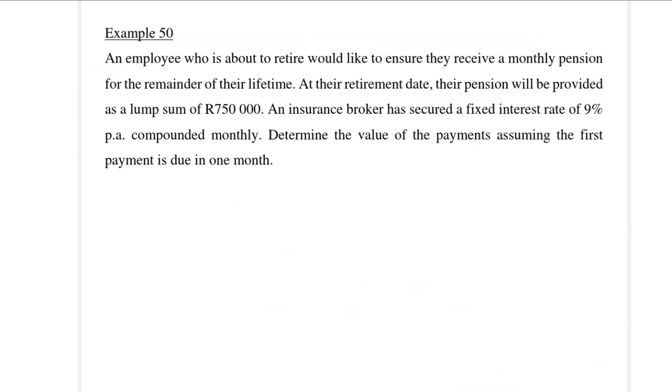Now we can look at a few examples. An employee who is about to retire would like to ensure that they receive a monthly pension for the remainder of their lifetime. At the retirement date, their pension will be provided as a lump sum of R750,000. An insurance broker has secured a fixed interest rate of 9% per annum compounded monthly. Determine the value of the payments assuming the first payment is due in one month. You can recognize this as ordinary perpetuity, not a growing perpetuity.